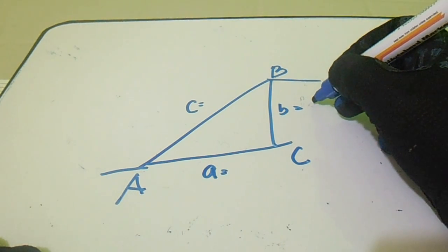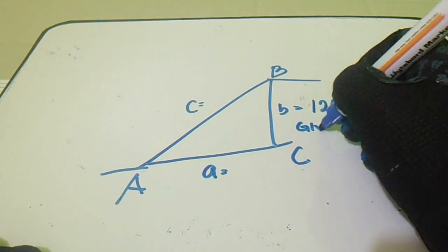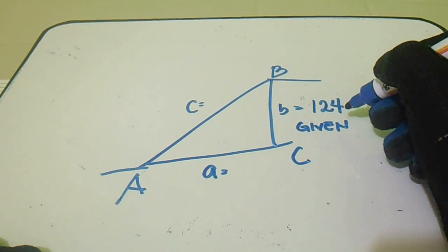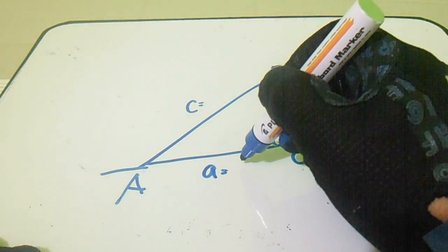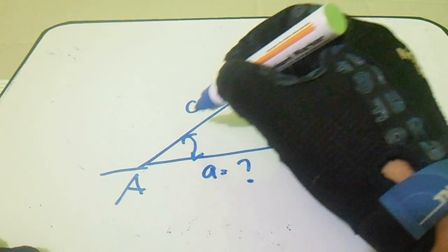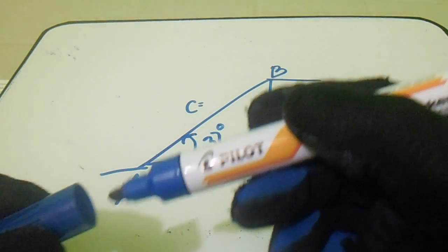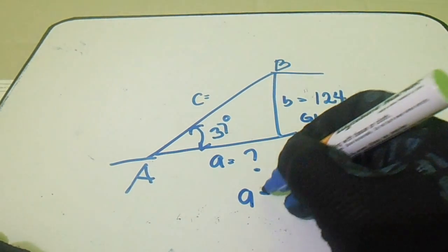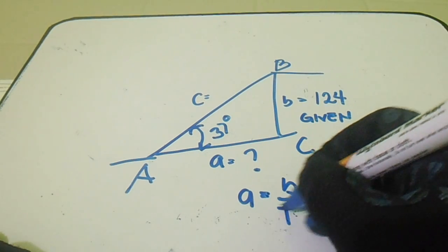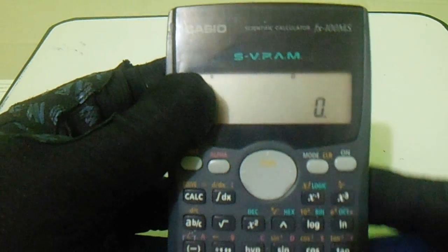Our given is B = 124. Let's compute side A. We also have a given angle of 37 degrees. The formula for that is A equals B over tan.